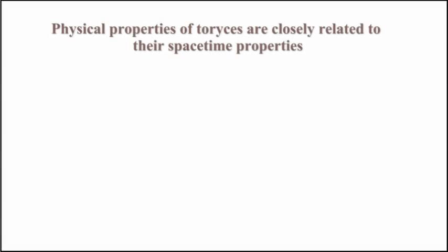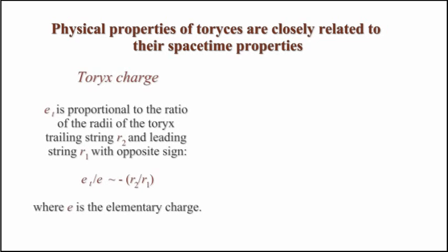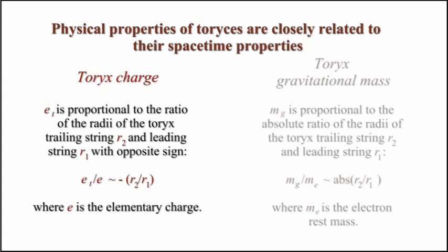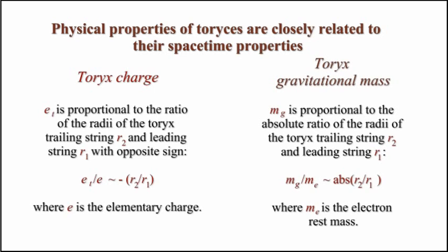Physical properties of Toreases are closely related to their spacetime properties. Torex charge ET is proportional to the ratio of the radii of the Torex trailing string R2 and leading string R1, with opposite sign, where E is the elementary charge. Torex gravitational mass Mg is proportional to the absolute ratio of the radii of the Torex trailing string R2 and leading string R1, where Me is the electron rest mass.